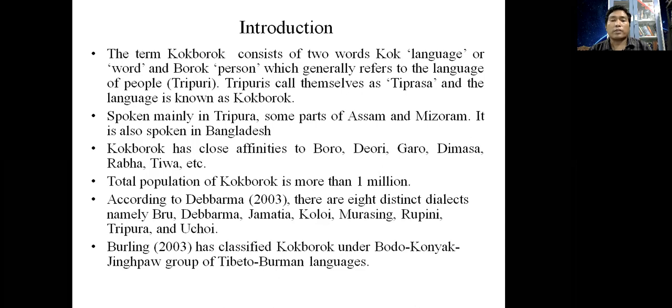Kokhbarok has close affinities to Boro, Deori, Garo, Dimasa, Rabha, Tiwa, etc. The total population of Kokhbarok is more than one million. According to De Burma 2003, there are eight distinct dialects: Debbarma, Jamatiya, Koloi, Murasing, Rupini, Tripura, and Uchoi. Barling 2003 has classified Kokhbarok under Bodo-Konyak-Jingpho group of Tibeto-Burman languages.